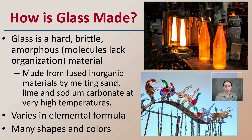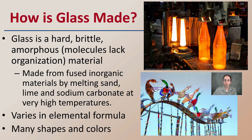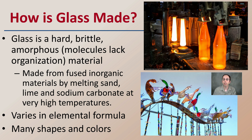Starting with how is glass made. Glass is a hard, brittle, amorphous material, which means its molecules lack organization. It's made from fused inorganic materials by melting sand, lime, and sodium carbonate at very high temperatures. This varies in elemental form depending on what type of glass. As a result, many shapes and colors can be derived in glass, as we see here with all the various birds and ornamentals of glass.